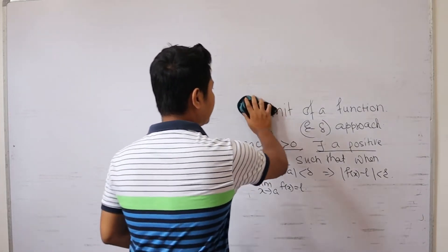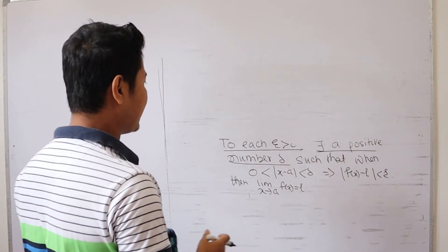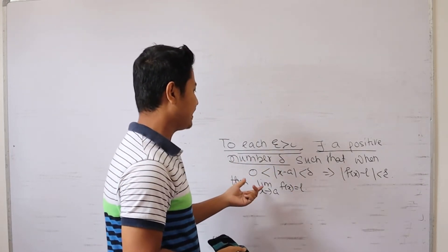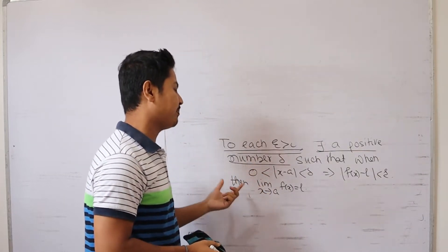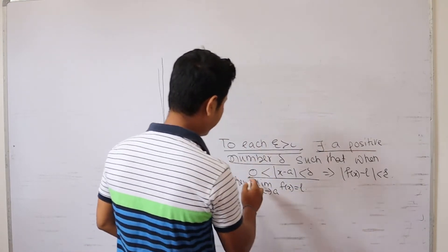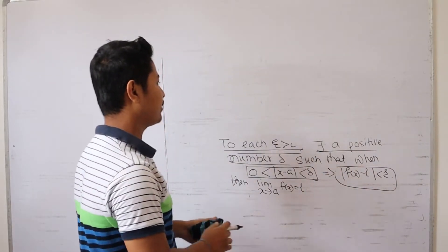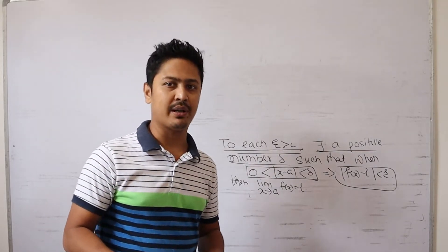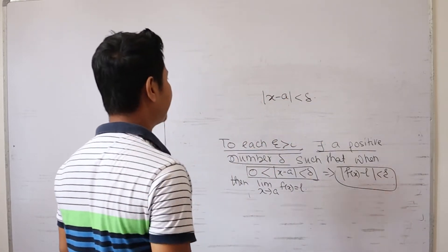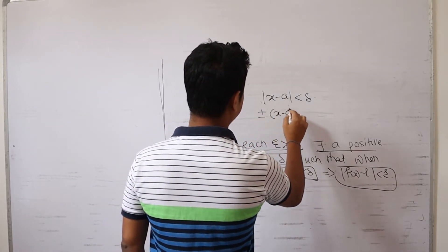The epsilon and delta definition means we can establish the same inequality result. So, mod of x minus a less than delta — we can open this up. This is the key inequality we need to look at to understand how we find the values and verify the limit condition.